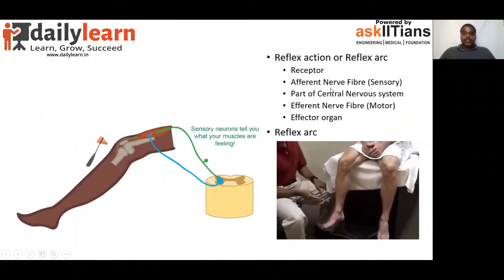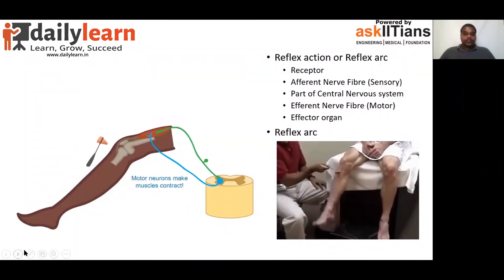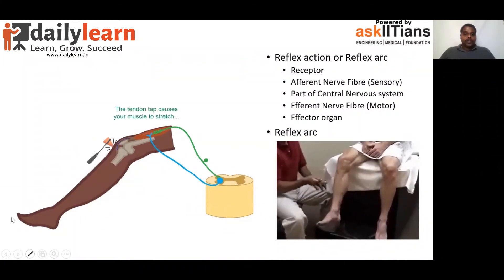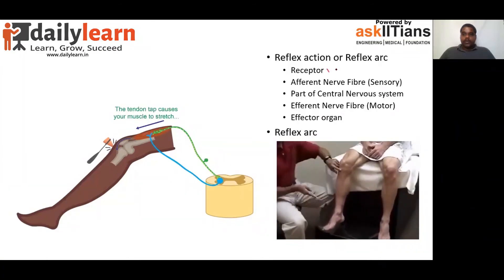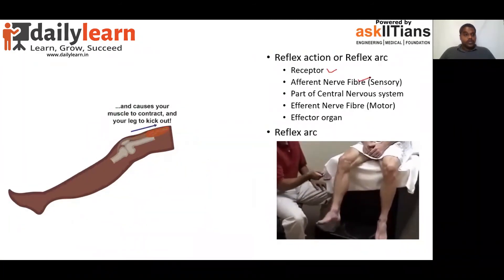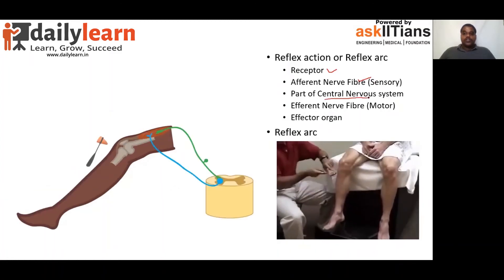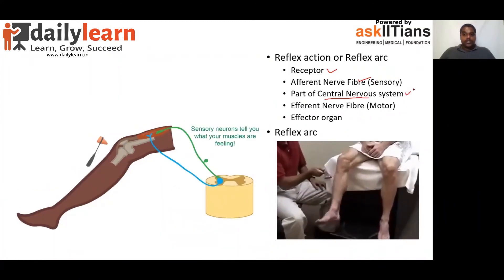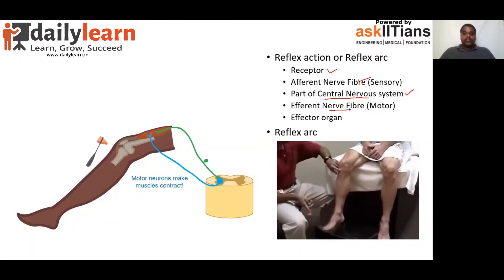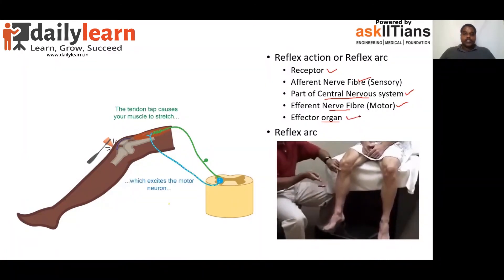Reflex Action actually involves a receptor, an afferent nerve which is the sensory function, a part of the central nervous system which is the processing, an efferent nerve which is the motor function, and the effector organ which is going to give us the response.